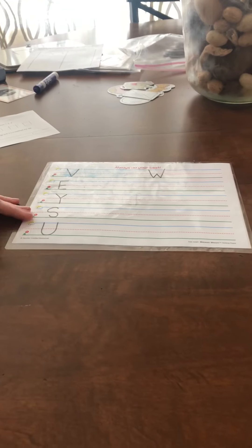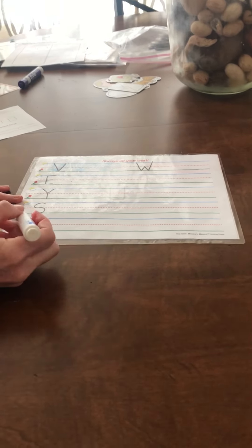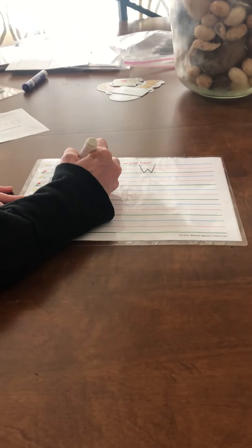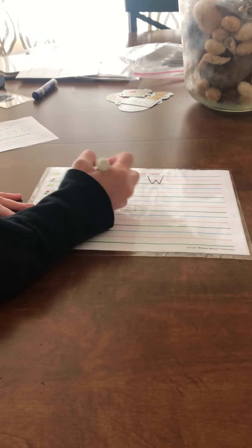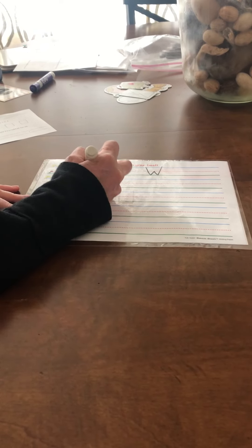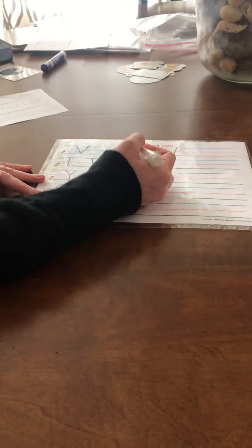First I want you to practice on your laminated sheet of paper. We're gonna do capital E's first. So we're gonna start at the top and make a straight stick down. Then we're gonna give it a hat at the top, a belt in the middle, and shoes at the bottom.